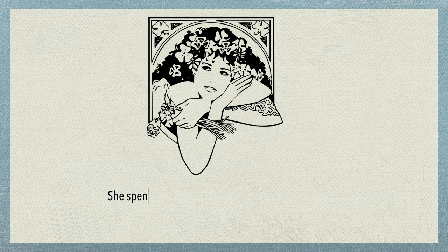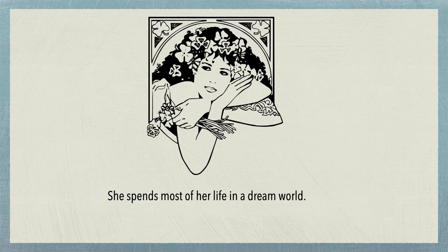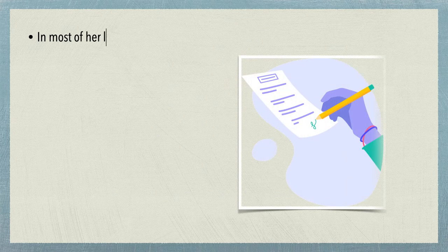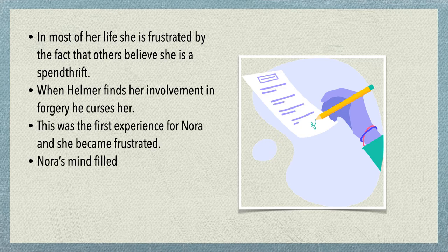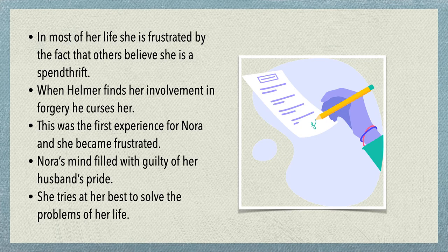She spends most of her life in a dream world. She is frustrated by the fact that others believe she is a spendthrift. When Helmer finds her involvement in forgery, he curses her. This was the first major experience for Nora, and she became frustrated. Nora's mind is filled with guilt over her husband's pride. She tries her best to solve the problems of her life. Nora is guilty of committing forgery — an innocent mistake she commits in her desperation to save her husband from his illness.